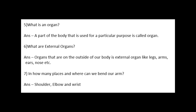Fifth, what is an organ? Answer: a part of the body that is used for a particular purpose is called an organ. Sixth, what are the external organs? Answer: organs that are on the outside of our body are external organs, like legs, arms, ears and nose, etc. Seventh, in how many places and where can we bend our arm? So the answer: shoulder, elbow and wrist.